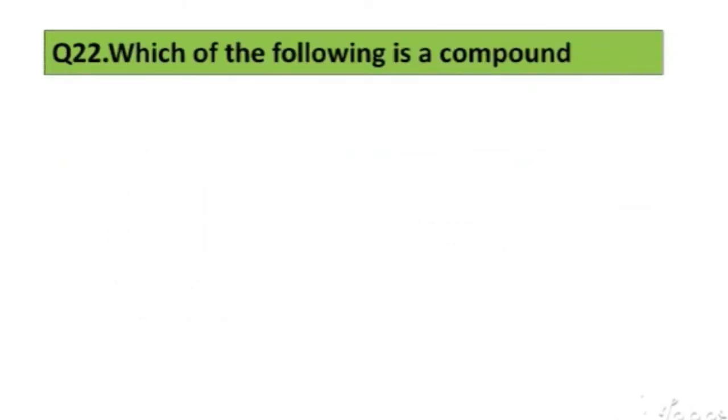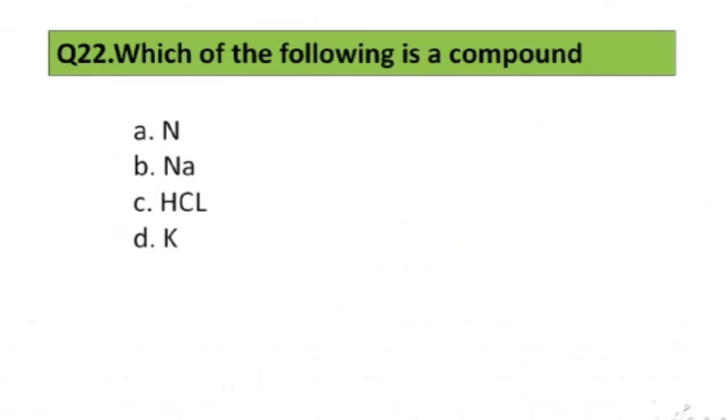Question number 22. Which of the following is a compound? A. N, B. NA, C. HCL, D. K. Answer C, HCL.